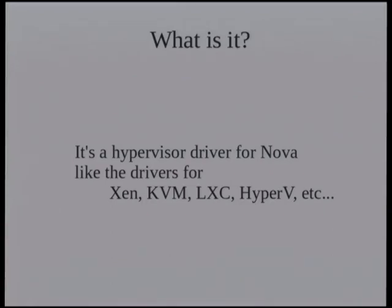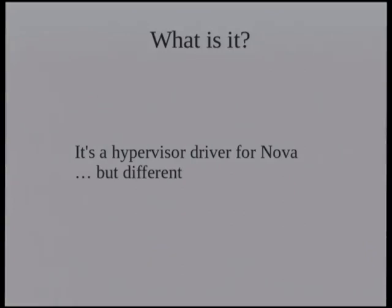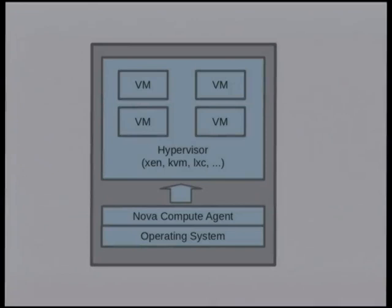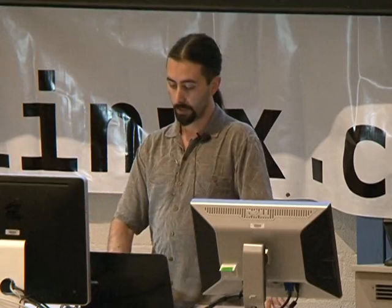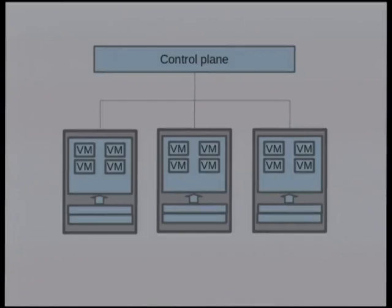It's different because it's not actually a hypervisor - there's nothing else actually running on the machines. Here's a diagram of what a Nova Compute host looks like. You've got physical hardware, the operating system running on it, the Nova Compute agent, and a hypervisor. The compute agent sends commands to the hypervisor to start, stop, snapshot VMs, and so on. On your network you have a bunch of these Nova Compute hosts and a control plane with OpenStack services.